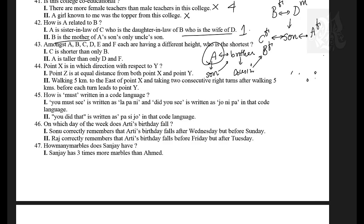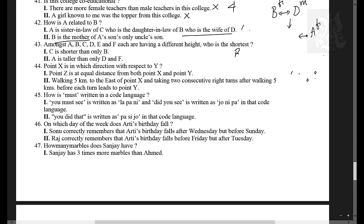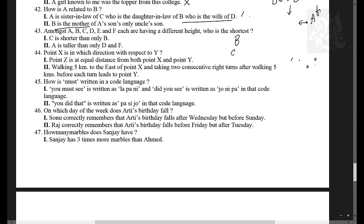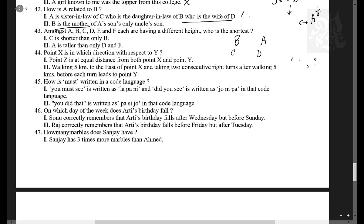Among A, B, C, D, E, F — each having a different height — who is the shortest? Statement one: C is taller than B and shorter than only B, so C is just below B with nobody above C — but this group is disconnected from others. Statement two: A is taller than D and F only. Since these groups have no common reference point, they cannot be connected. Answer: cannot be determined — option four.